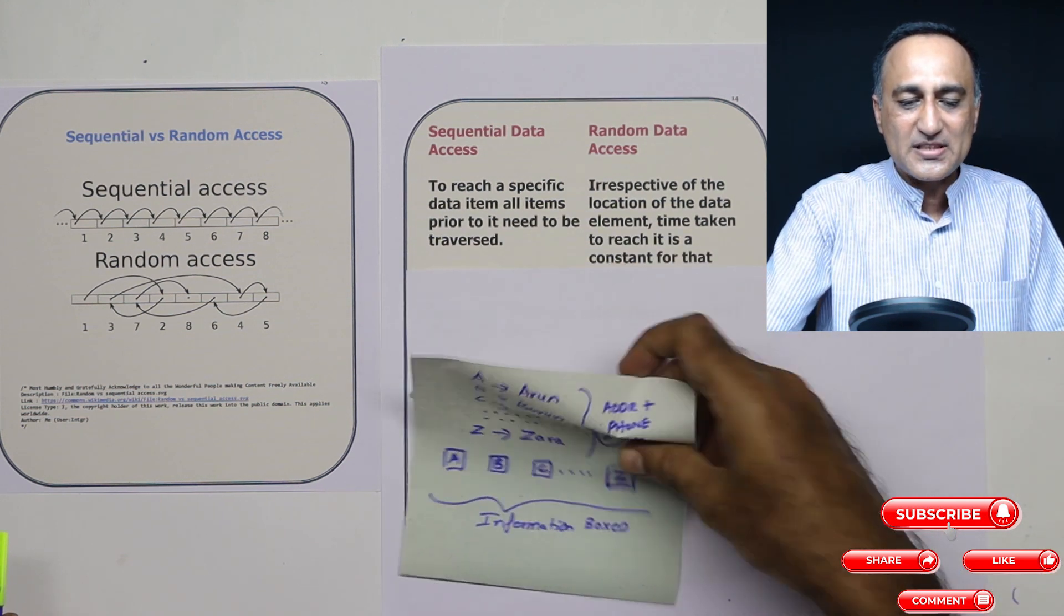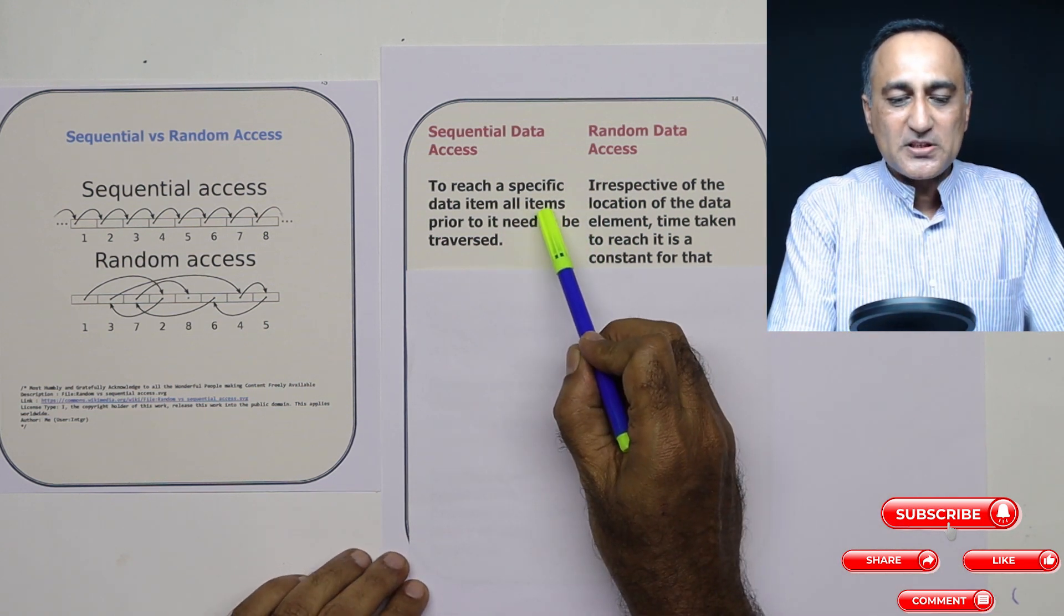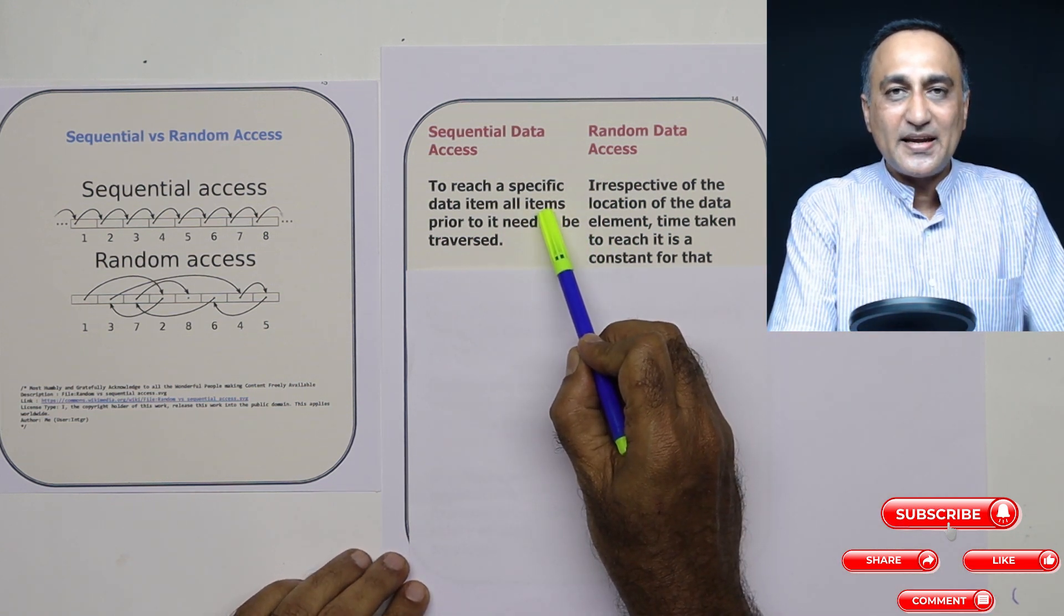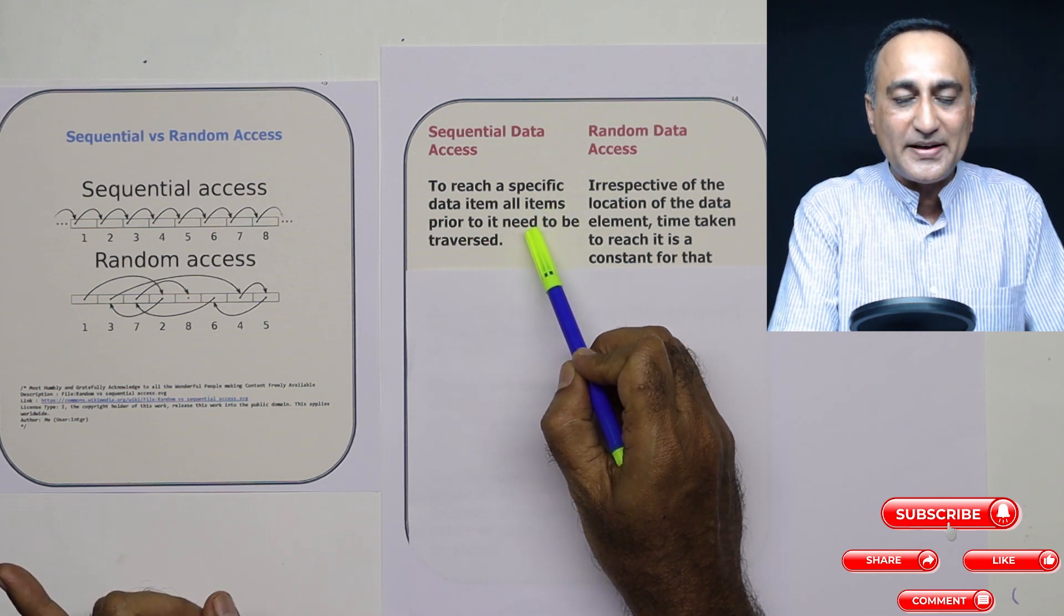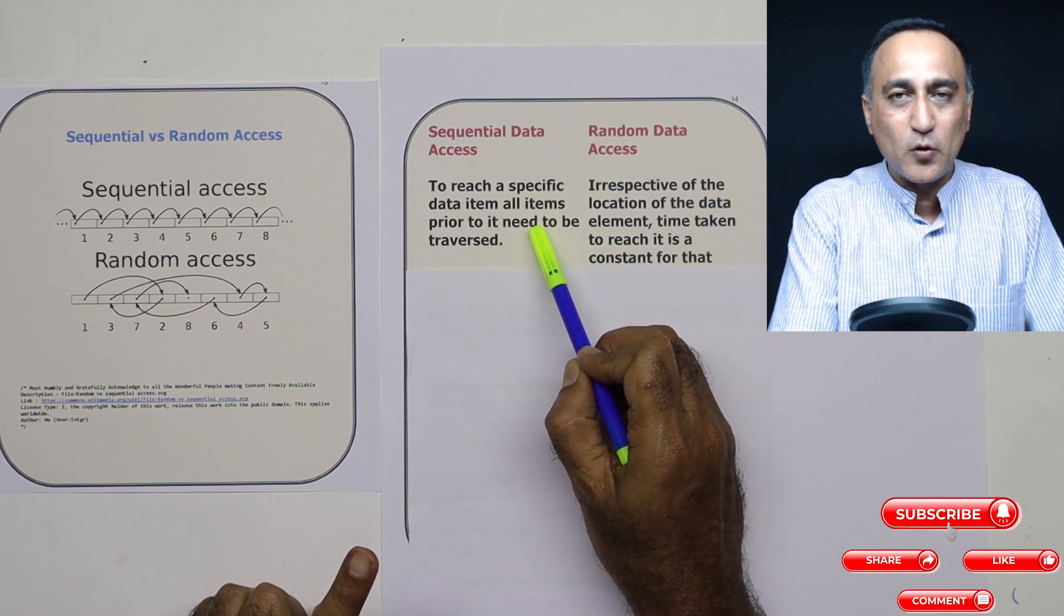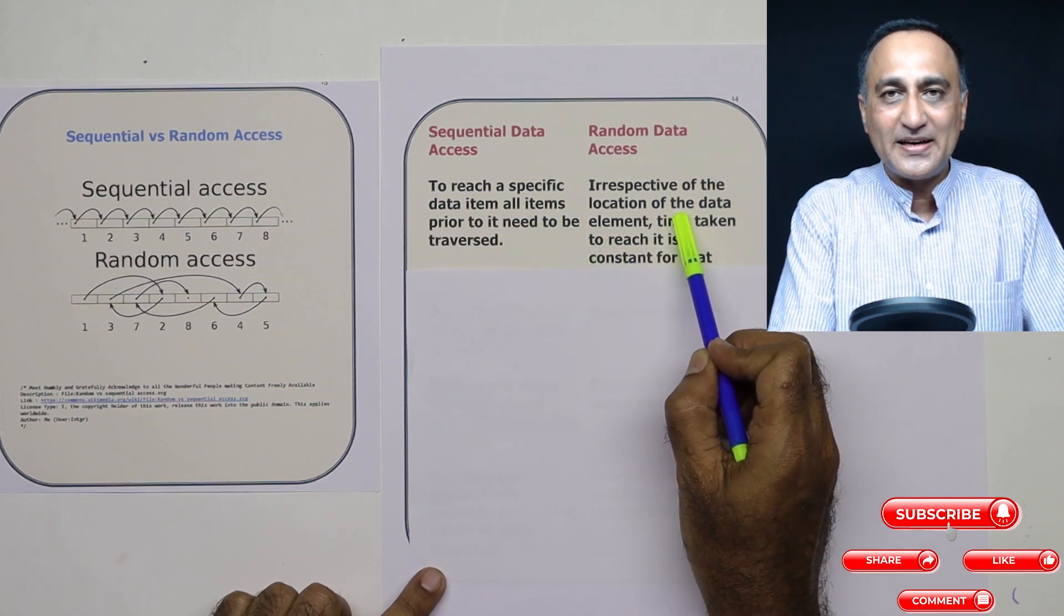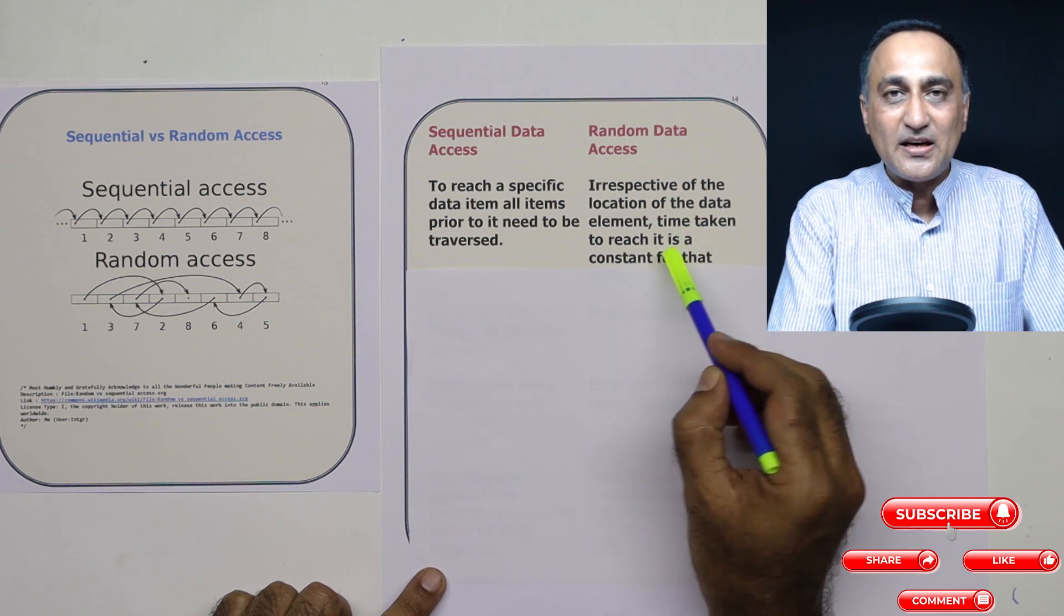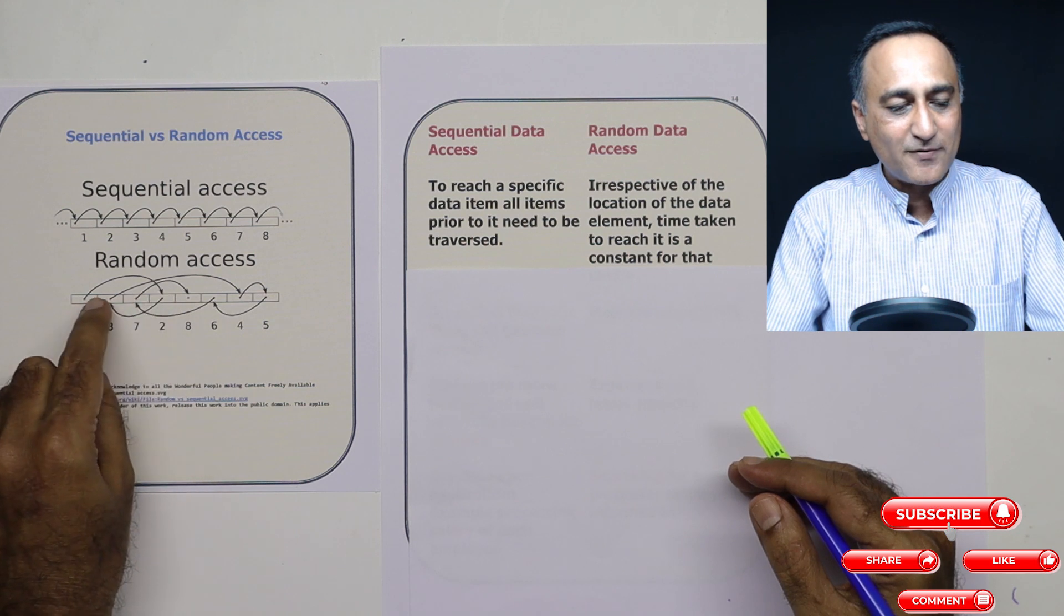Now let me try to help you understand the differences. I've already told you to reach a specific item in sequential data access, I need to compare and check all the items before it whether it is the item I am looking for. Here it directly goes to the location to find the data. The advantage of this is it will reach the data irrespective of where it is located in a constant amount of time.